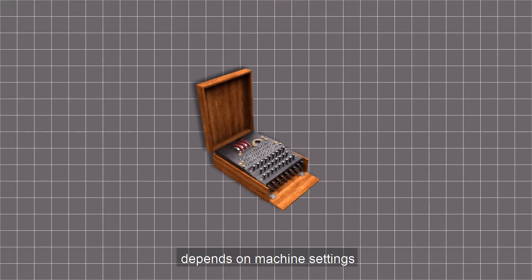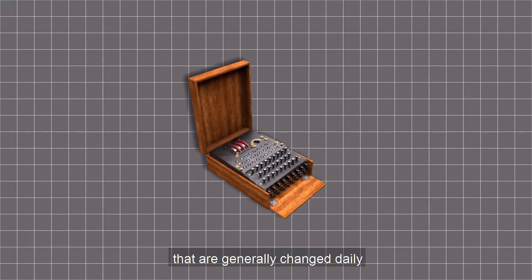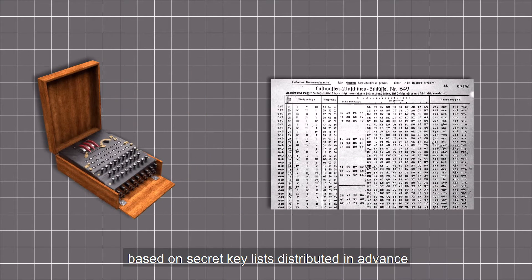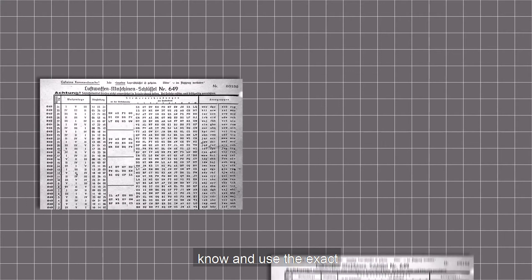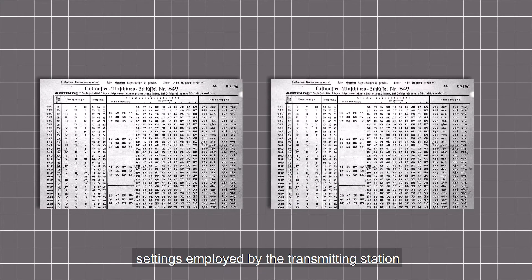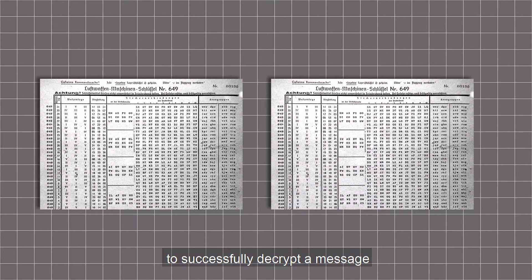The security of the system depends on machine settings that are generally changed daily, based on secret key lists distributed in advance. The receiving station would have to know and use the exact settings employed by the transmitting station to successfully decrypt a message.